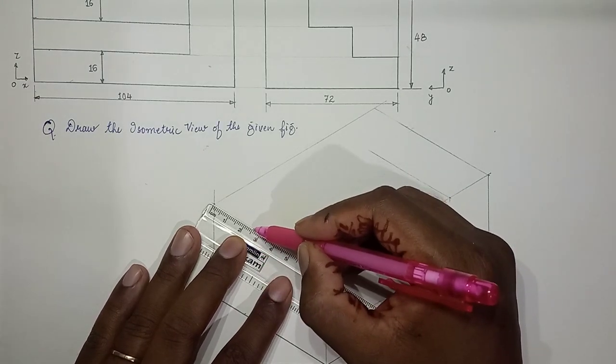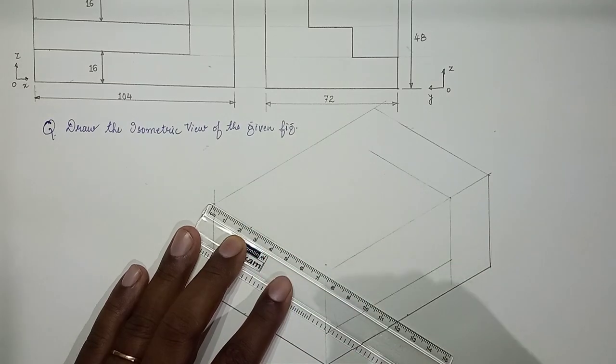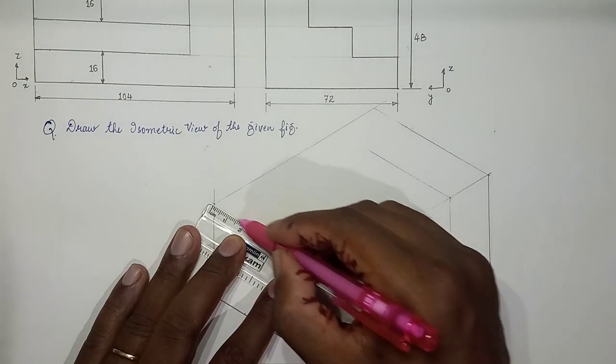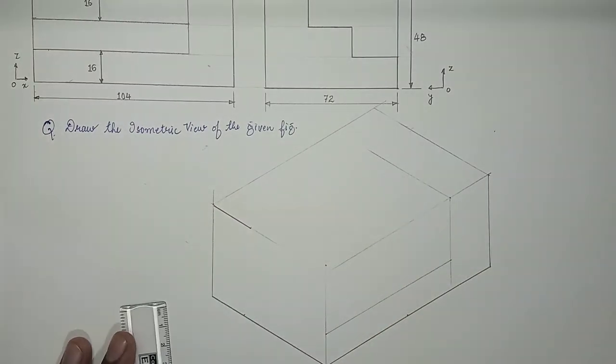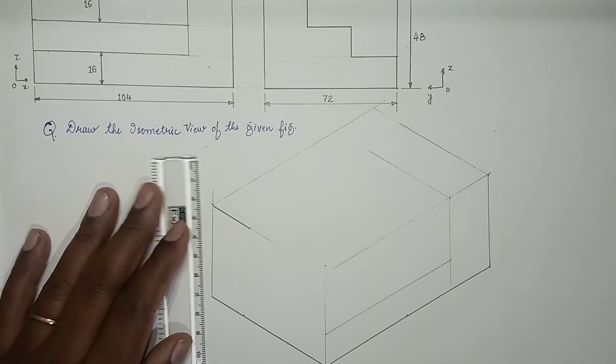So this is 24, you have marked 24 along y-axis. You can make it dark. So along z-axis we need to mark 16.